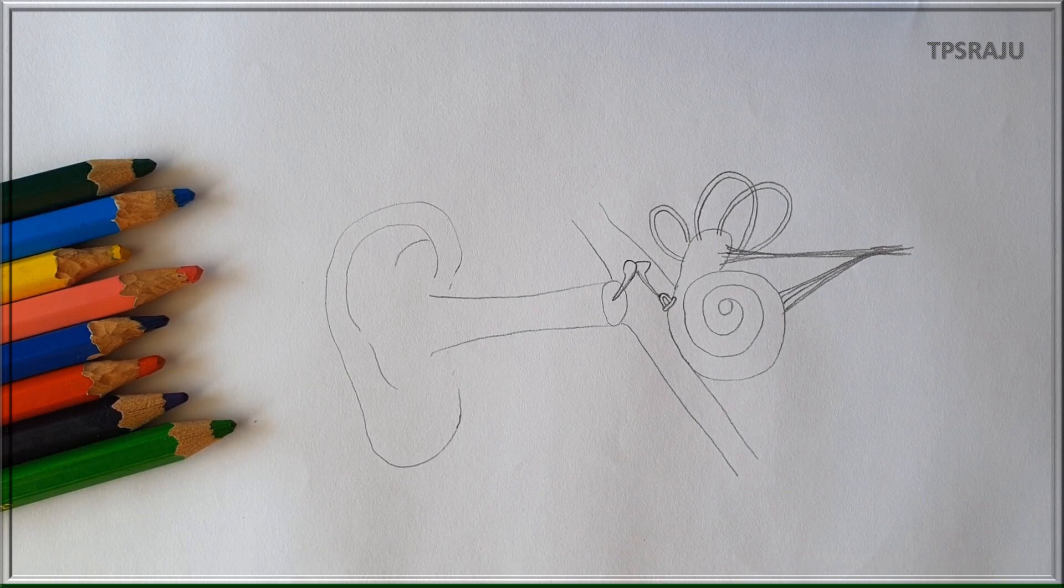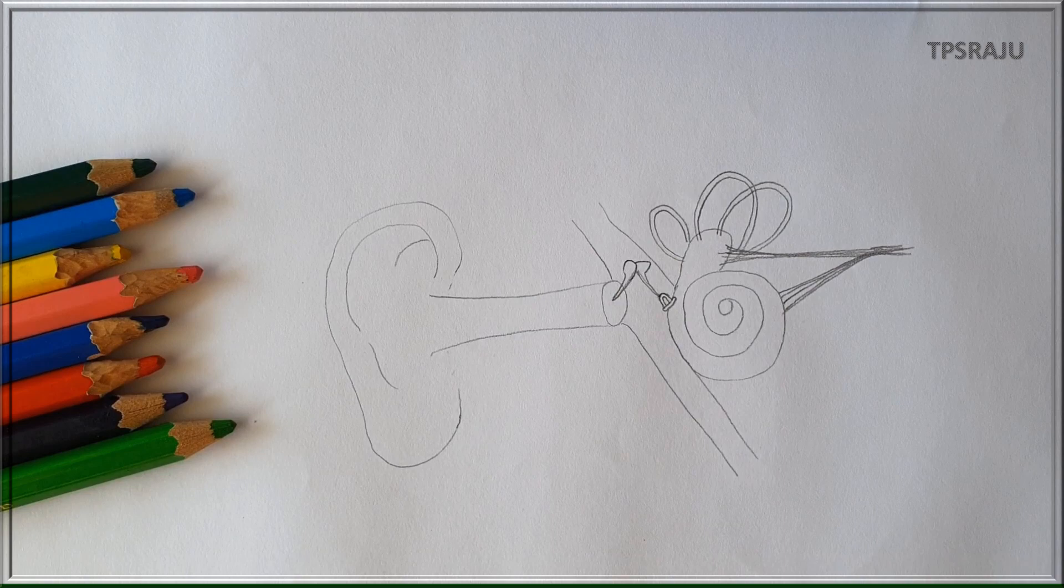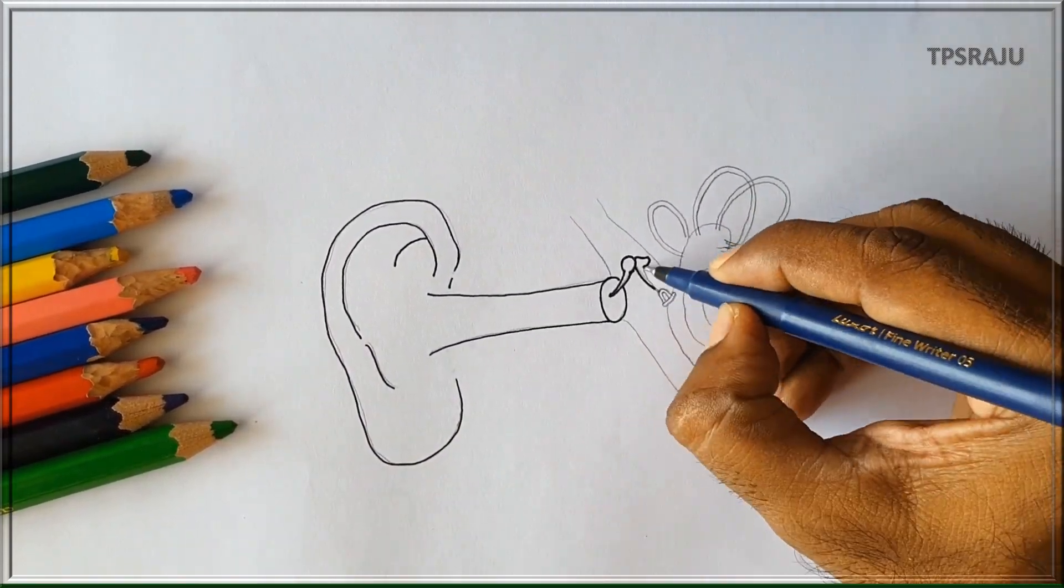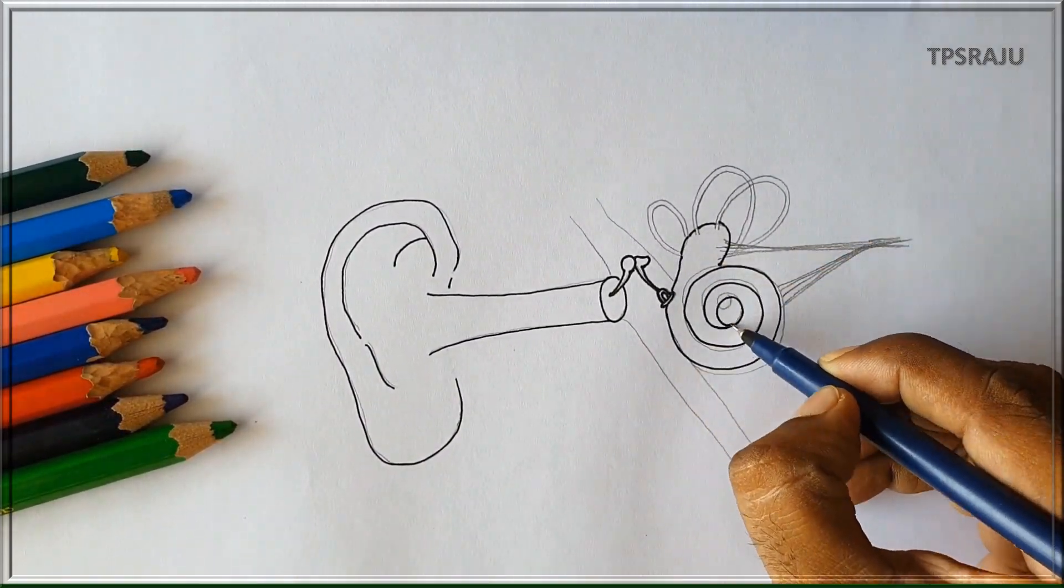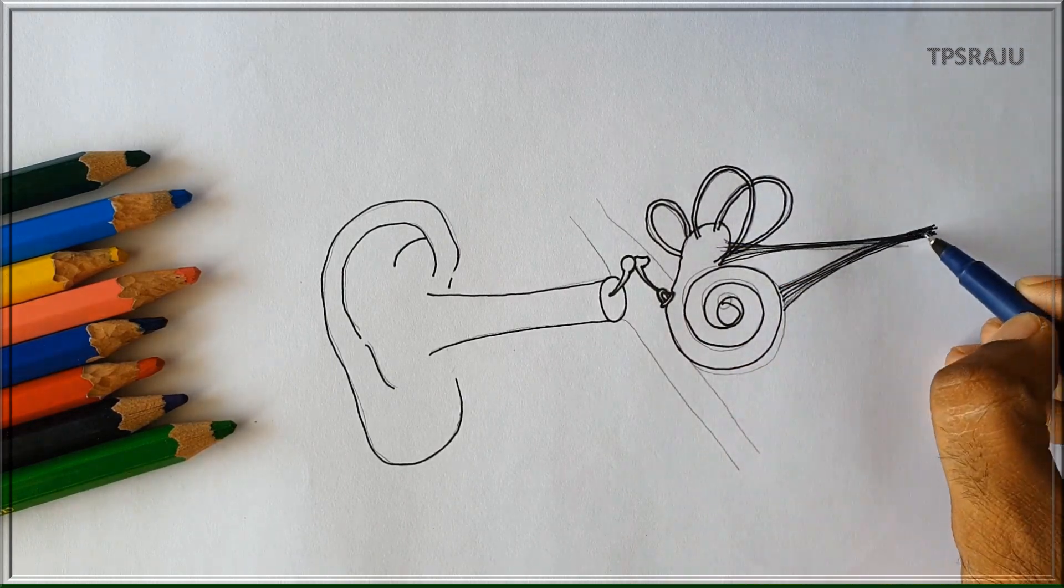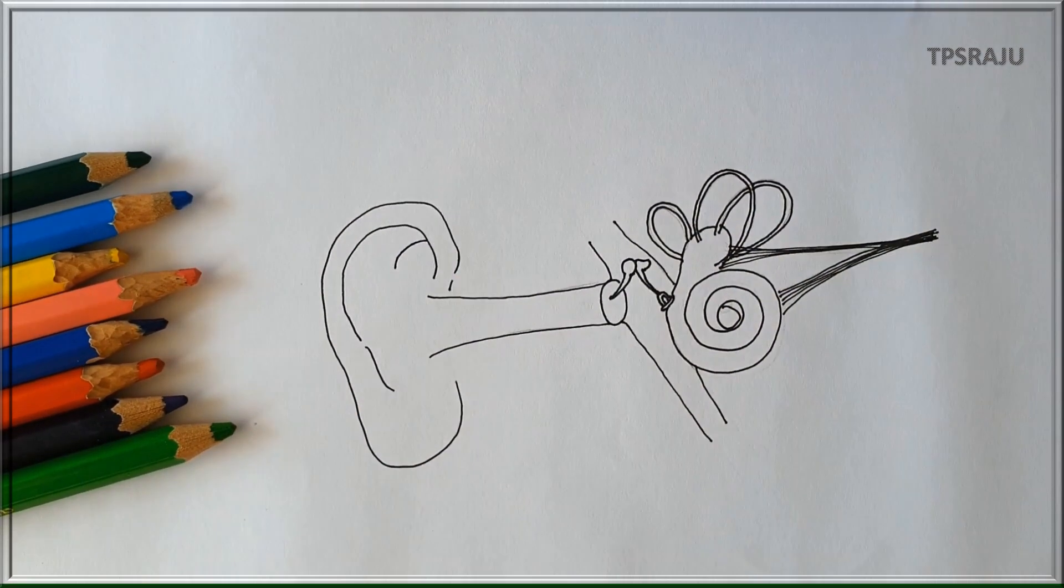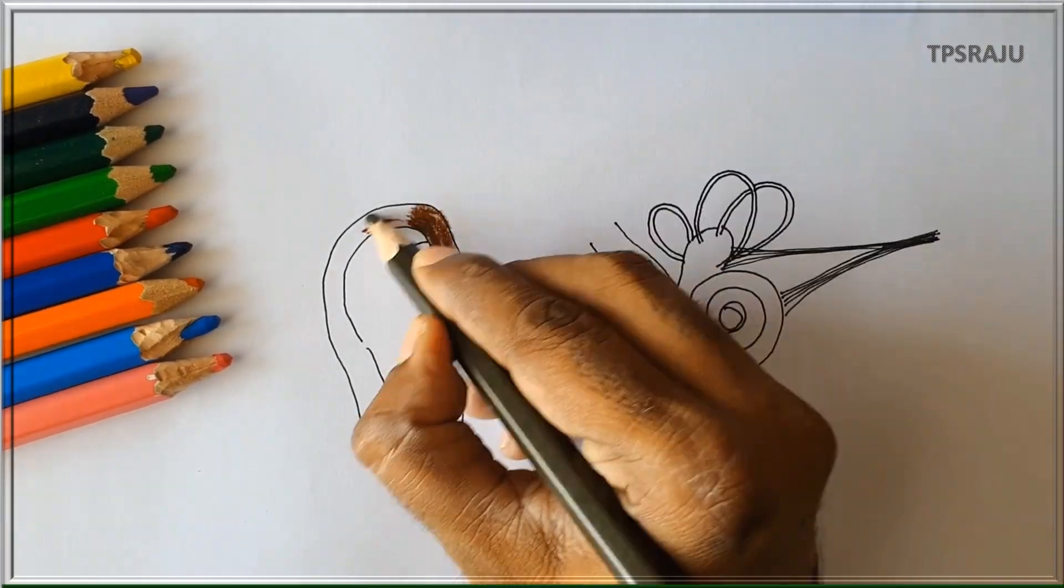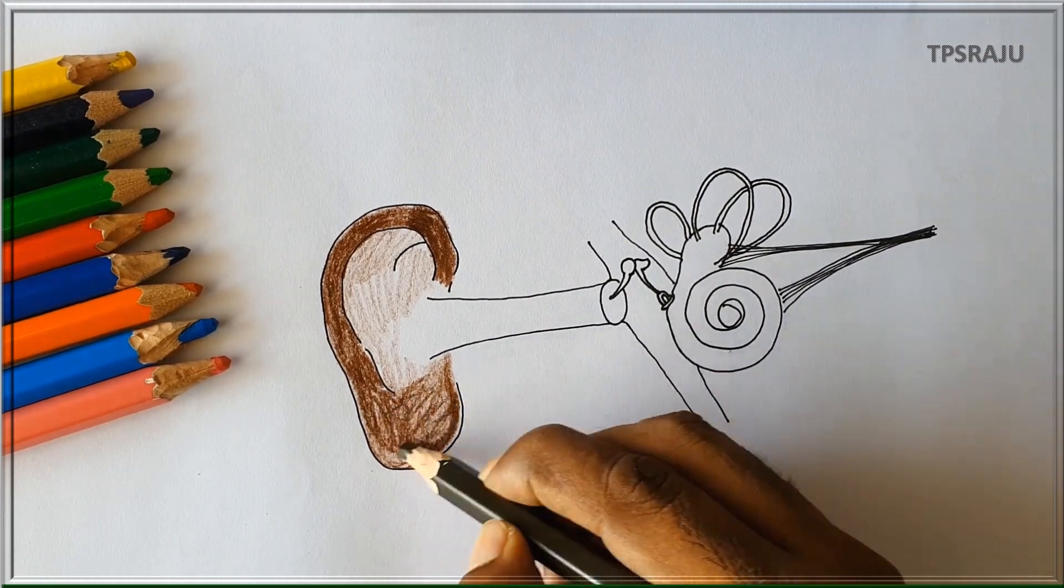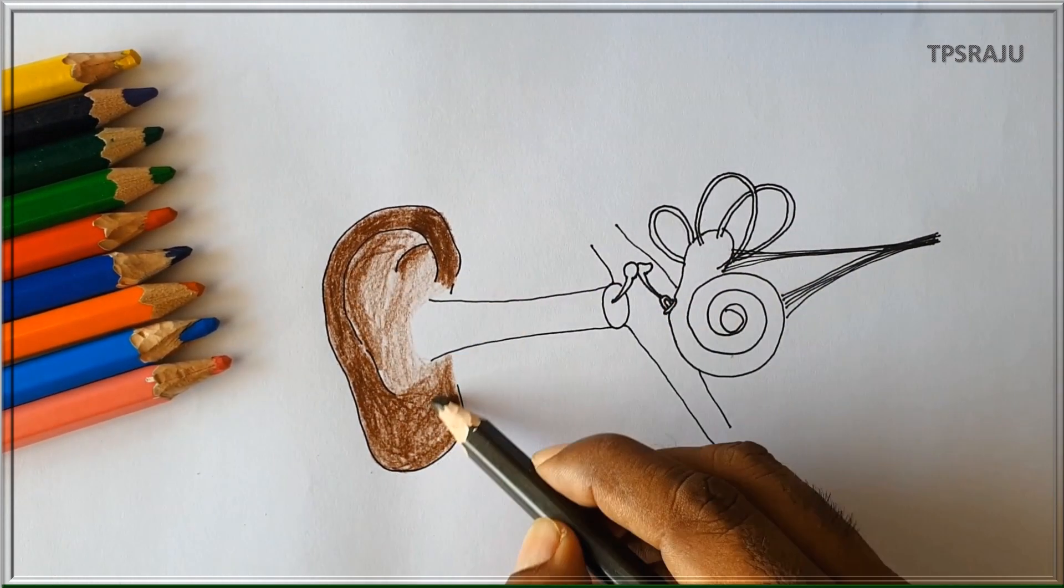Now the diagram is completed. For better appearance, again draw the diagram with black pen. If we apply the colors, it will become more beautiful. Let us apply the colors.